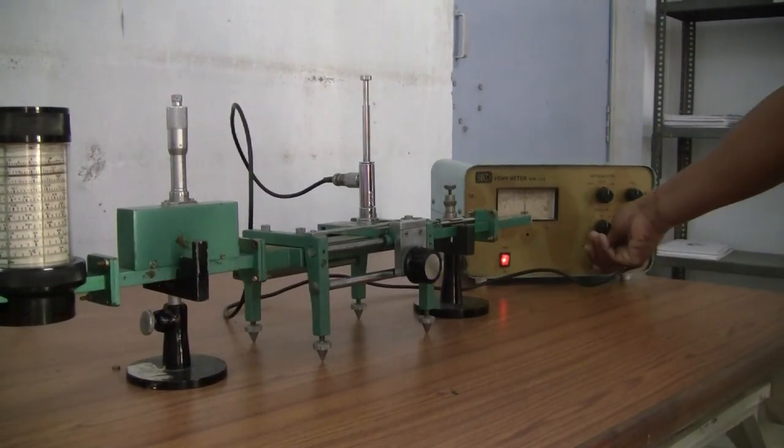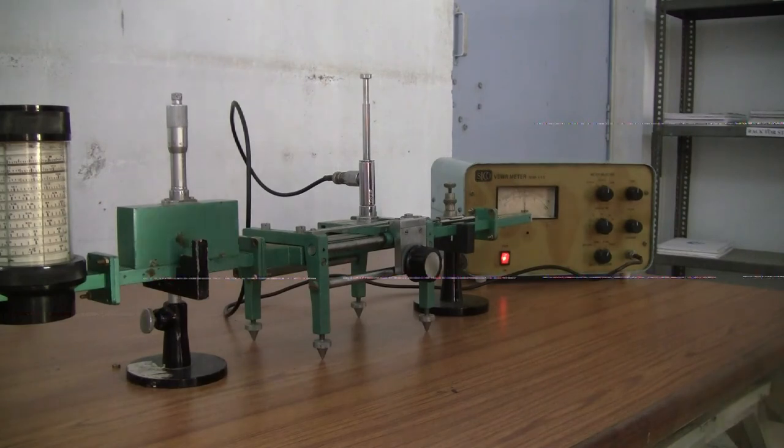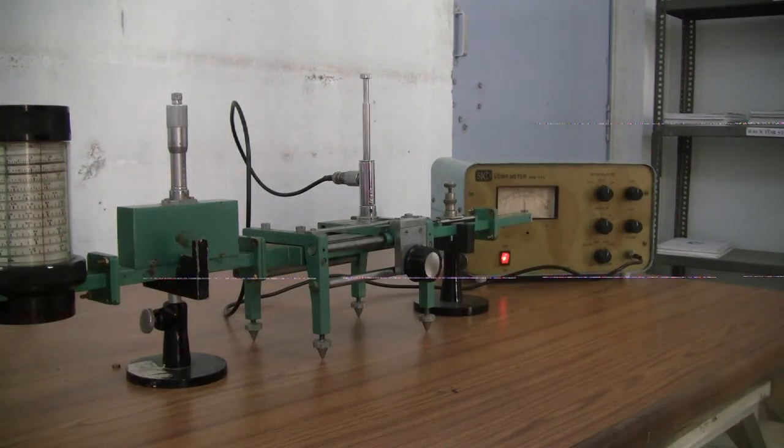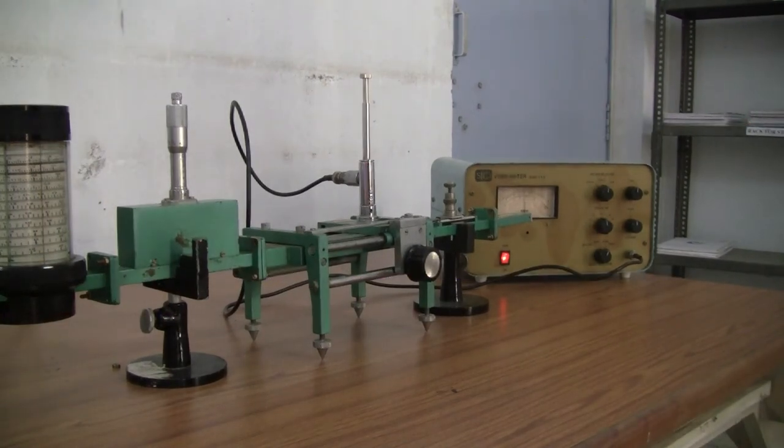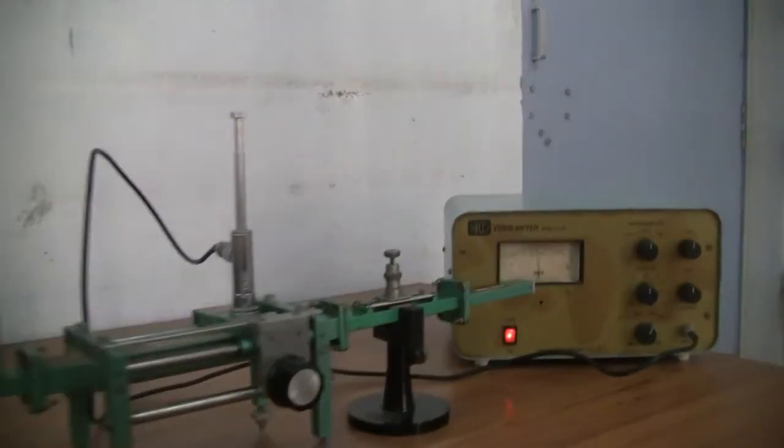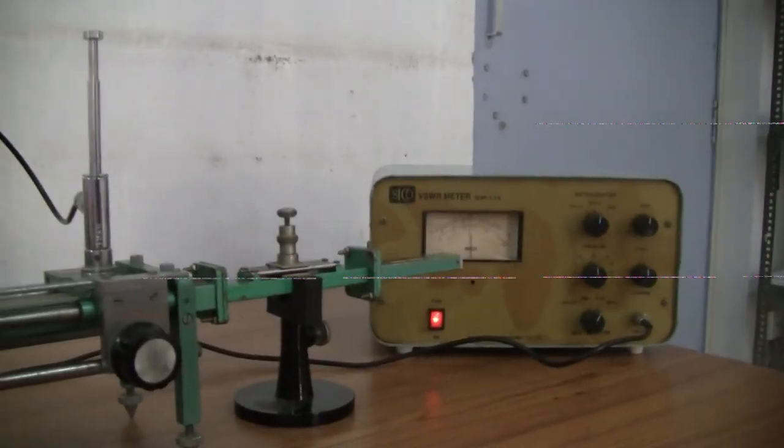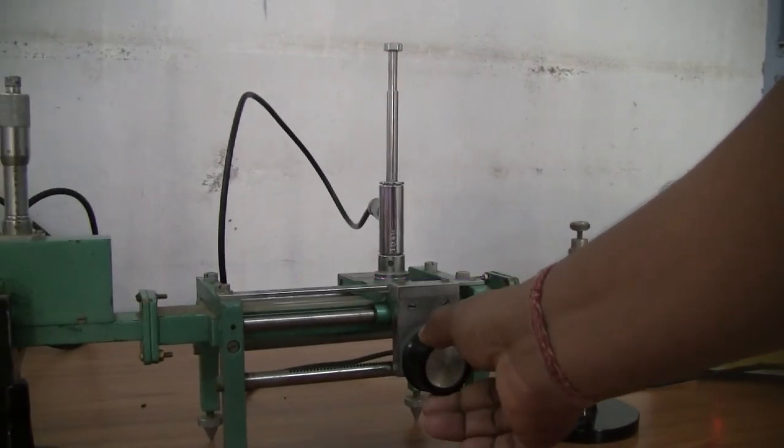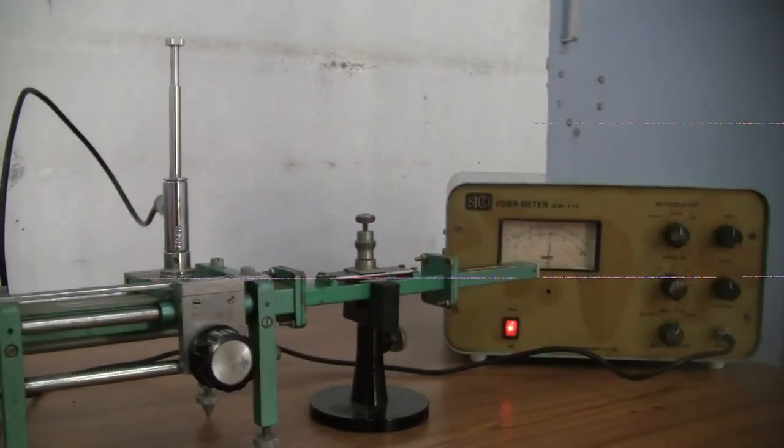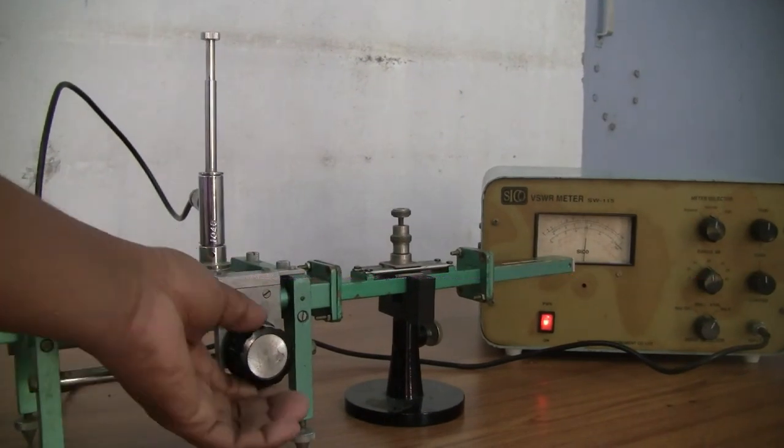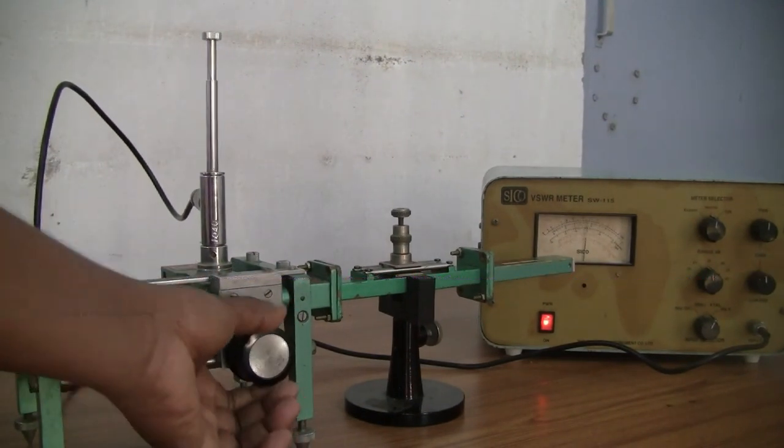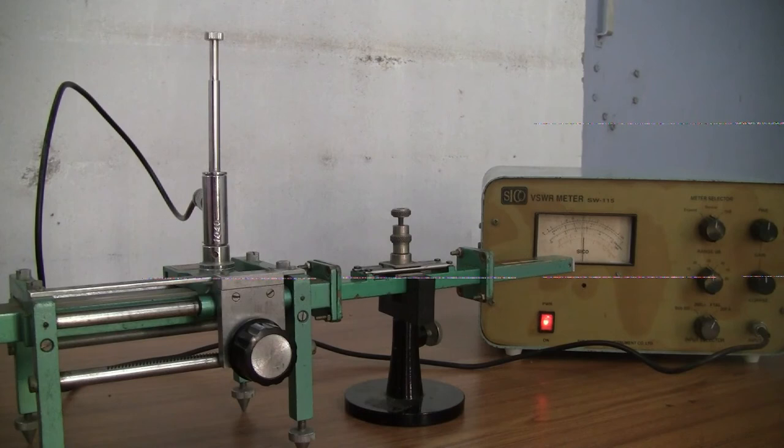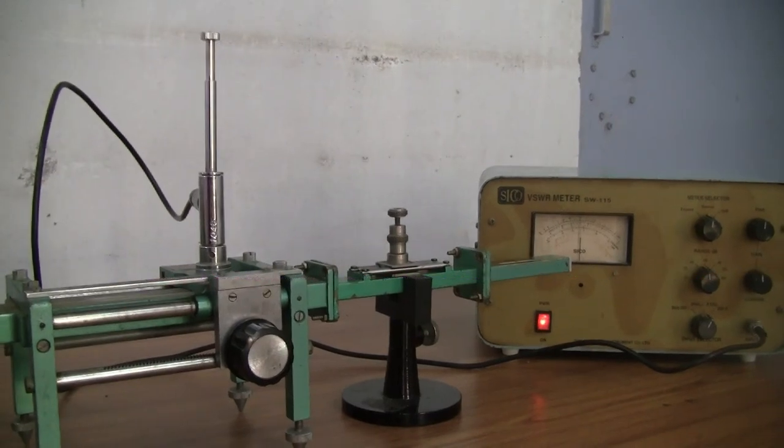Now our setup is ready. First we measure the value of load VSWR and load minima. For that, keep the slotted line in extreme right position and move a little bit towards left. Observe the pointer of VSWR meter. If the power is decreasing, then it's okay. Go back to the previous position. Otherwise, adjust the slotted line and find out the maximum position.